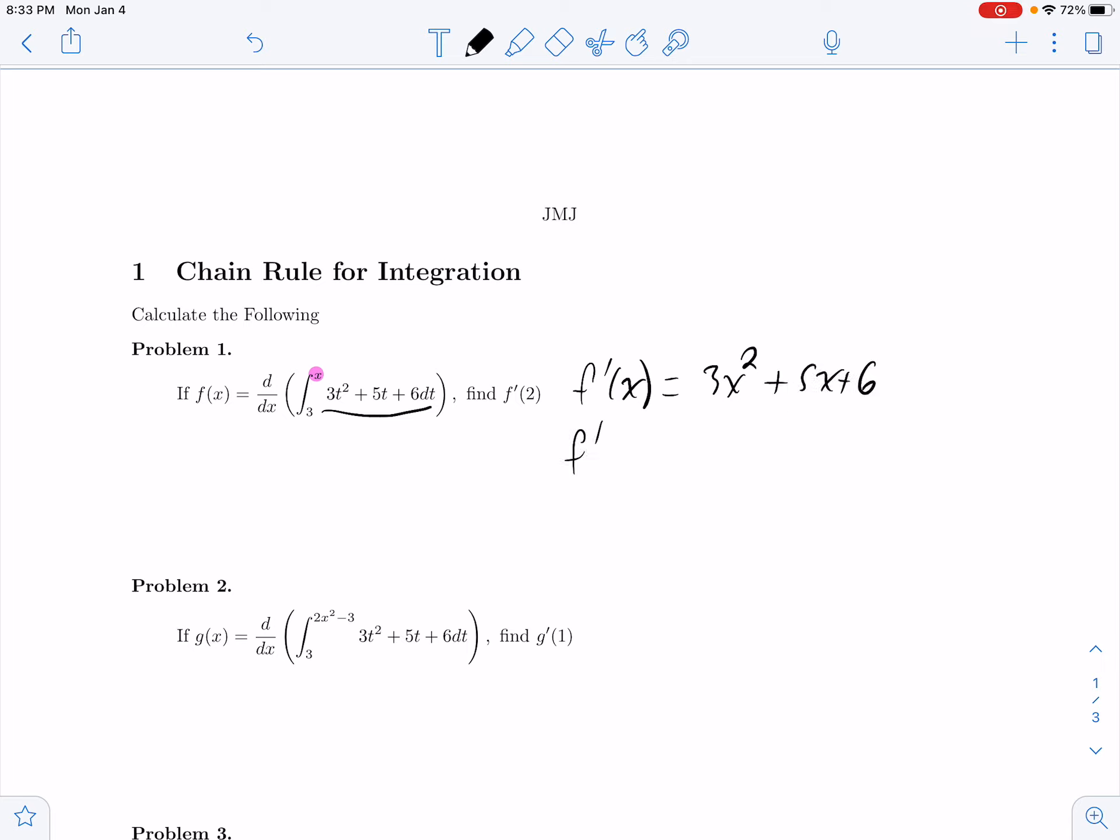So I'm going to do f prime of 2. This will be 3 times 2 squared plus 5 times 2 plus 6, which is what? 2 squared is 4, so this is 12 plus 10 plus 6, which equals 28.